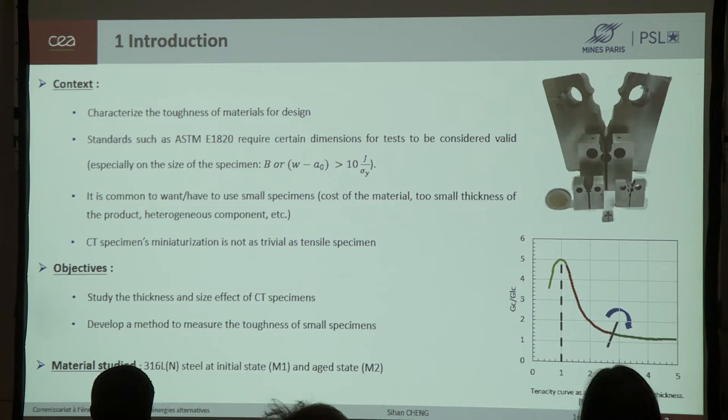So, we are interested in the miniaturization of CT specimens. However, this miniaturization is not as easy as a tensile specimen because when the specimen thickness decrease, the stress triaxiality decrease, which leads to an increase of fracture toughness, like the figure shown on the right. When the thickness decreases and it arrives at a critical value, we have a change of tendency.